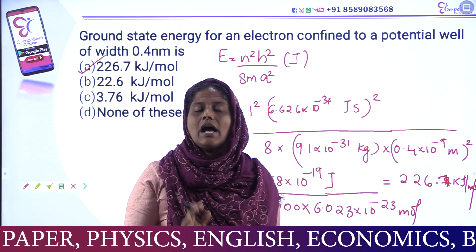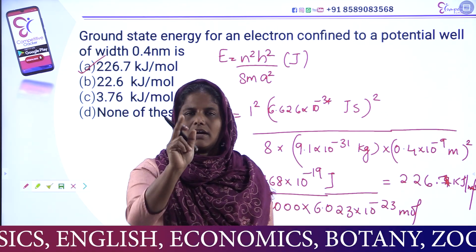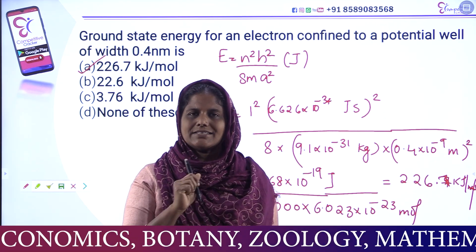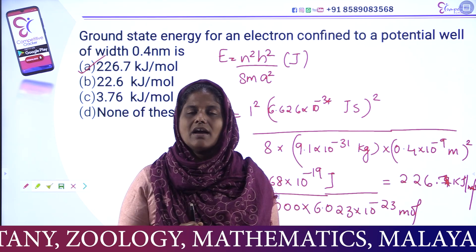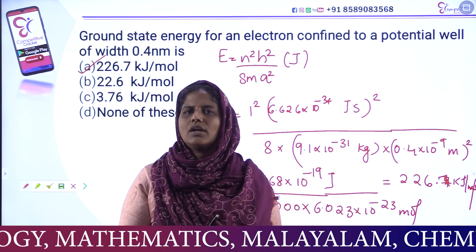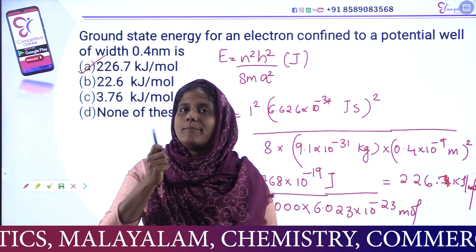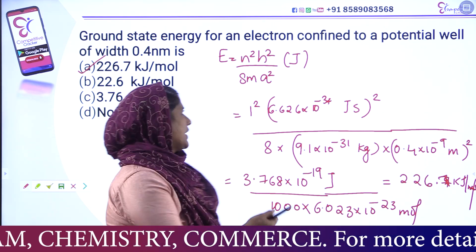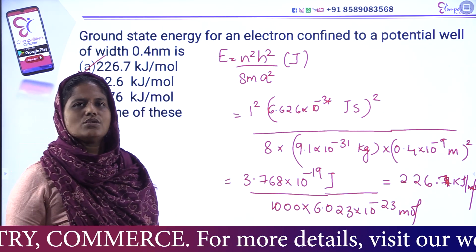In quantum chemistry, in the one-dimensional box, the equation of energy is n² h² by 8ma². Converting from Joules to kilojoules per mole by dividing by 1000, the final answer is 226.7 kilojoules per mole.